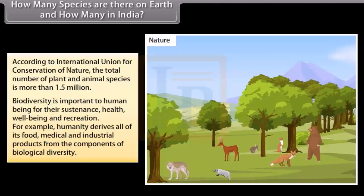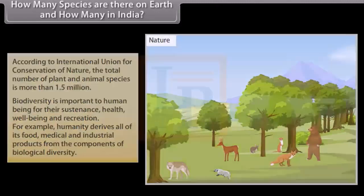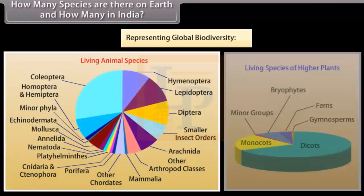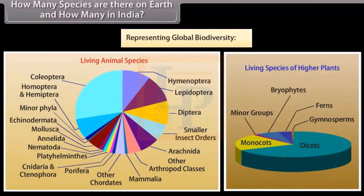humanity derives all of its food, medical and industrial products from the components of biological diversity. Here is a pie graph representing global biodiversity.